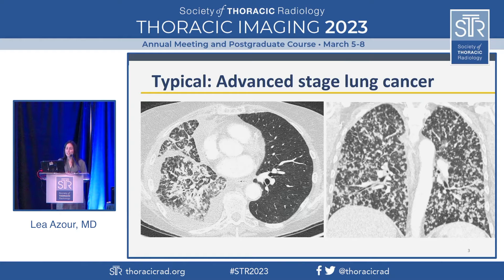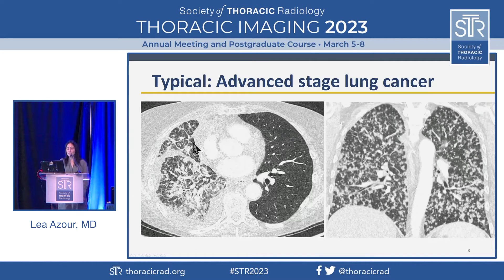Unfortunately, most of the lung cancers we come across present at advanced stages. We're only catching about 18% of lung cancers when they are local, and 22% of them have already spread to regional nodes by the time we pick them up. So these are two cases of stage 4 lung cancer. On the left, we see lymphangitic disease and loculated malignant pleural fluid. On the right, a different patient with diffuse metastatic nodularity bilaterally.